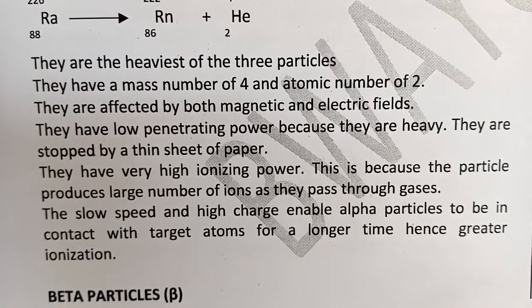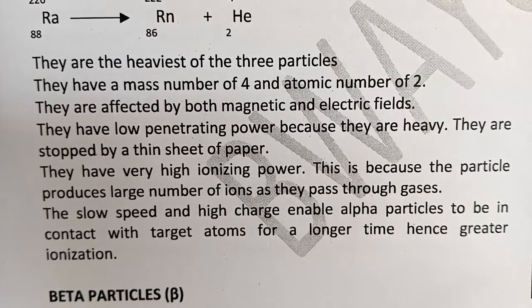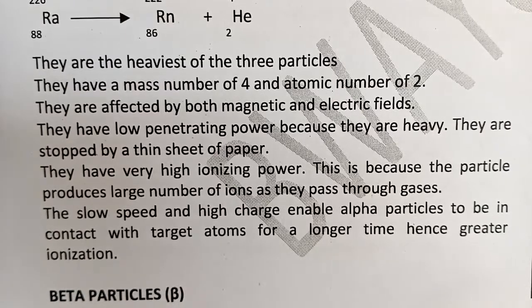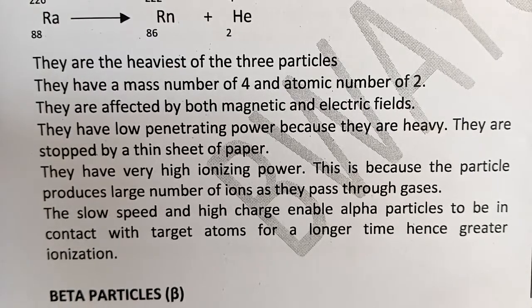Alpha particles have very high ionization energy because of their slow speed and high charge. As they pass through the air slowly, they cause other particles to become charged. This is ionization by the simple law of electrostatics — when a charged particle passes near other particles, it induces a charge in them.